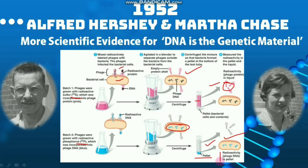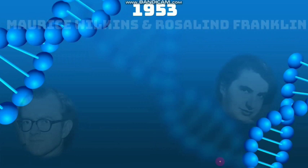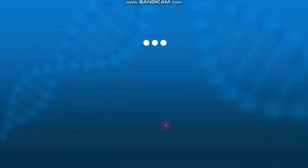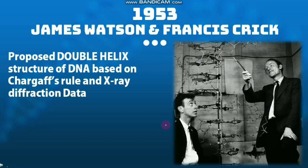In 1953, Maurice Wilkins and Rosalind Franklin conducted an X-ray diffraction study and provided the X-ray diffraction data of DNA to the scientific community. Based on this data, the double helical nature of DNA was revealed. Finally, based on Chargaff's rule and the X-ray diffraction data from Maurice Wilkins and Rosalind Franklin, James Watson and Francis Crick proposed the DNA double helix model.